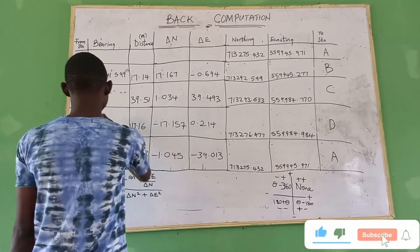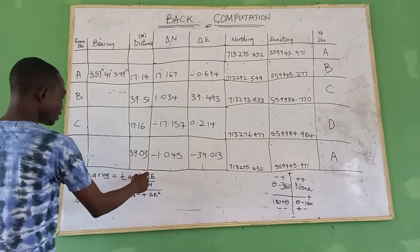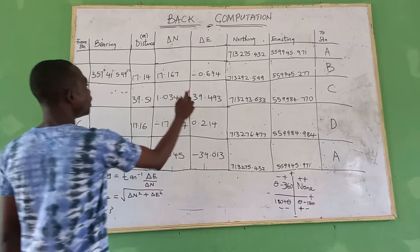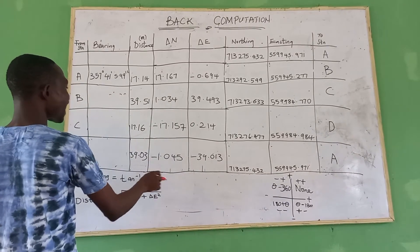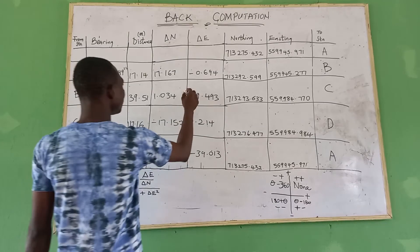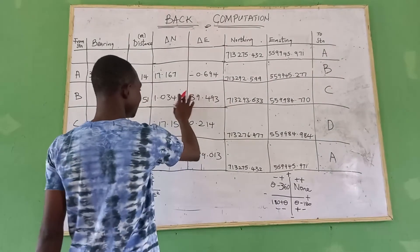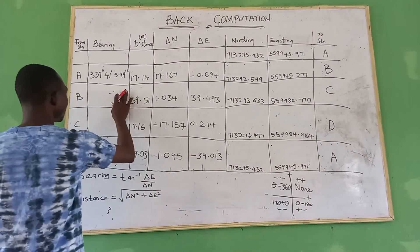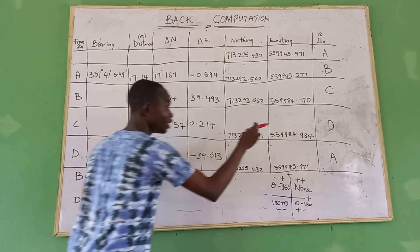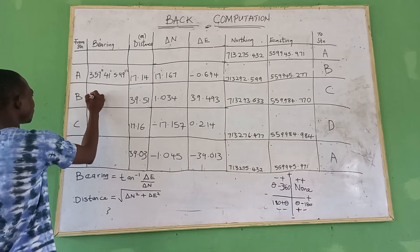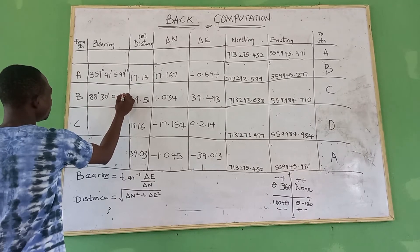For station B, we compute arctan inverse of delta easting divided by delta northing — that is 39.493 divided by 1.034. After computing, we have plus-plus, which falls in the first quadrant. So no adjustment is needed; the direct answer is 88 degrees, 30 minutes, 0.84 seconds.